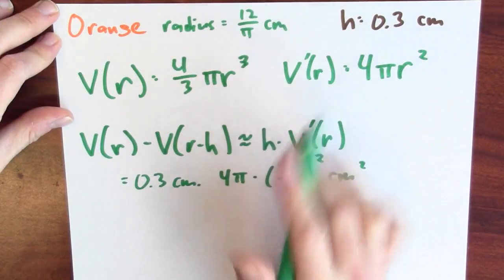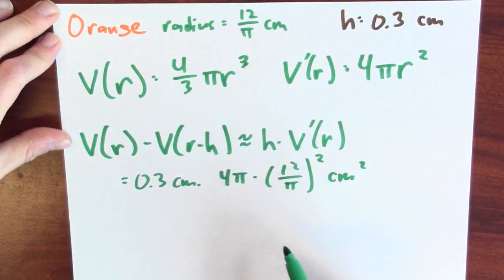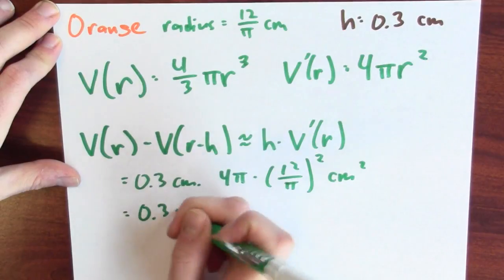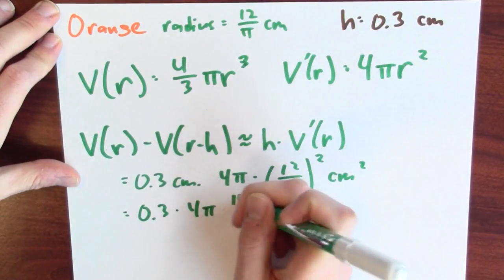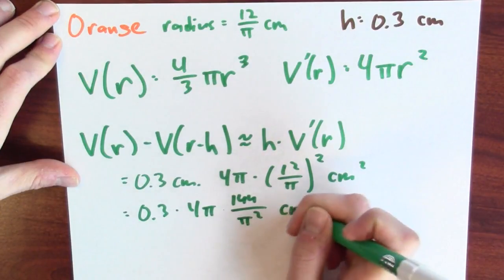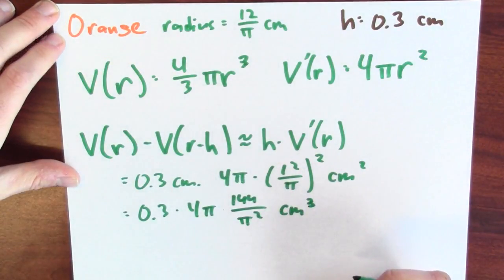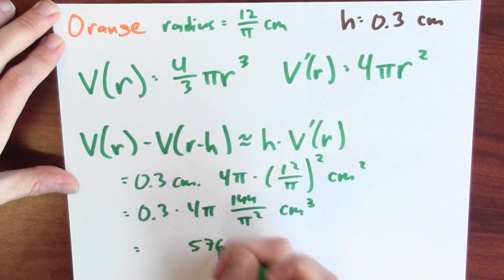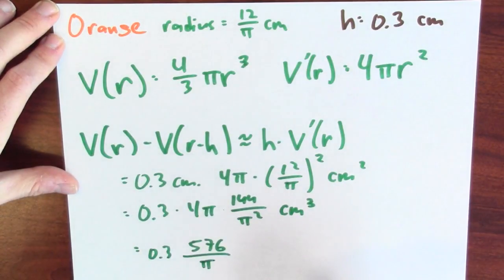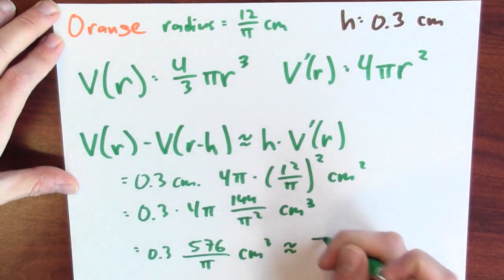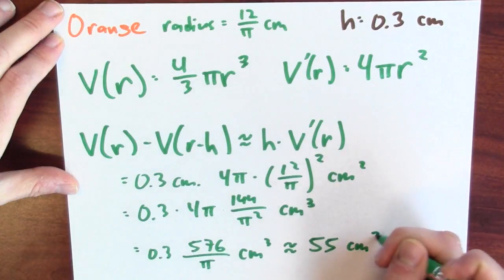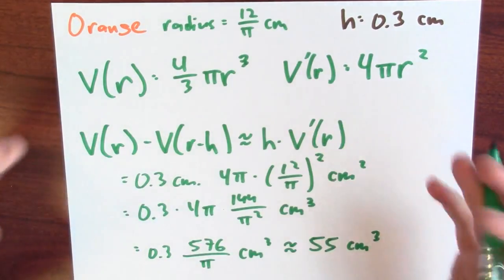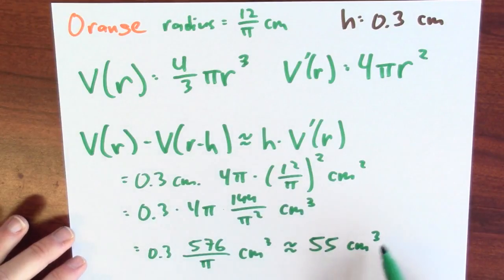So this is cubic centimeters. That's good, because I'm trying to calculate a volume. I'll just keep calculating here. So it's 0.3 times 4π times 144 over π² cubic centimeters. And 4 times 144 is 576 times 0.3. The π divided by the π² is going to be a π in the denominator. So I got 0.3 times 576 over π cubic centimeters. That's about 55 cubic centimeters. So the volume of the rind is approximately 55 cubic centimeters.